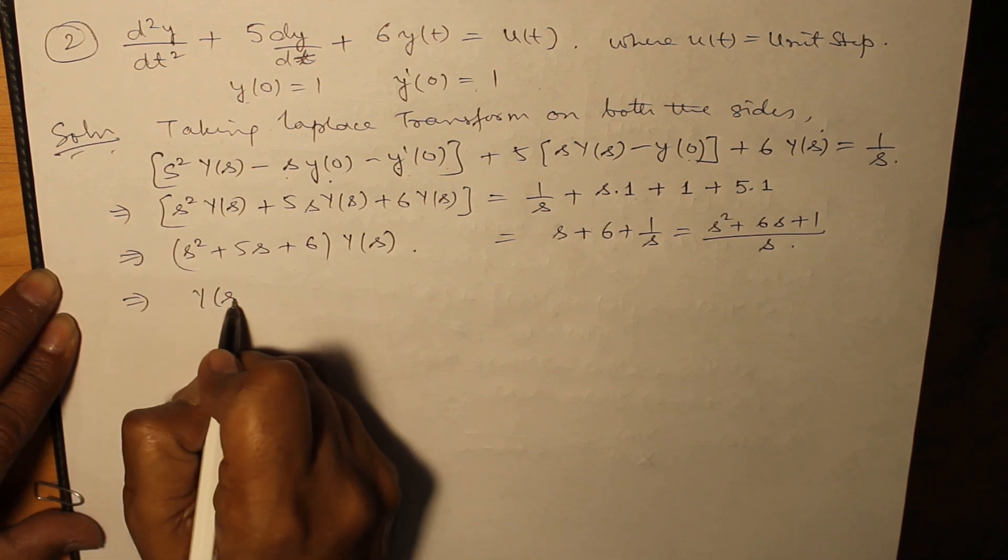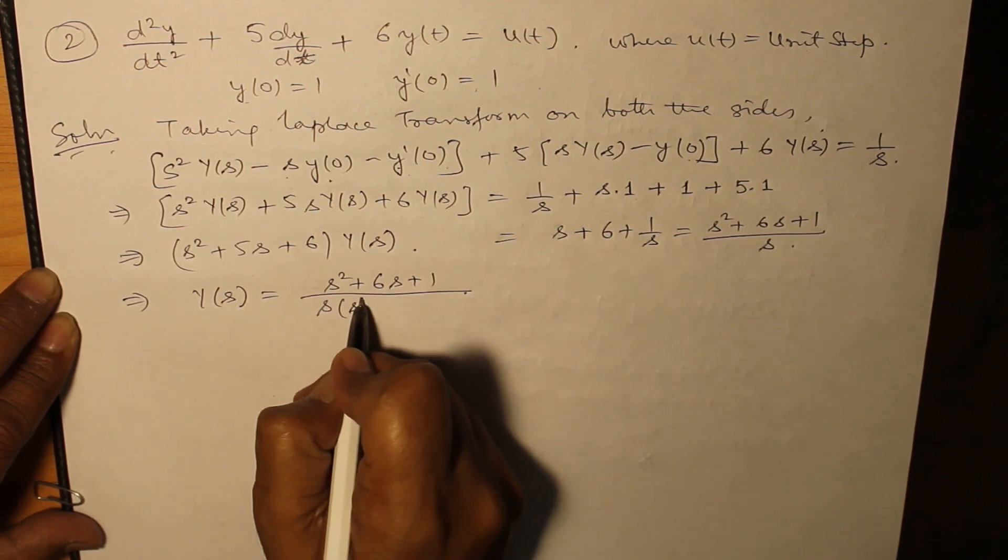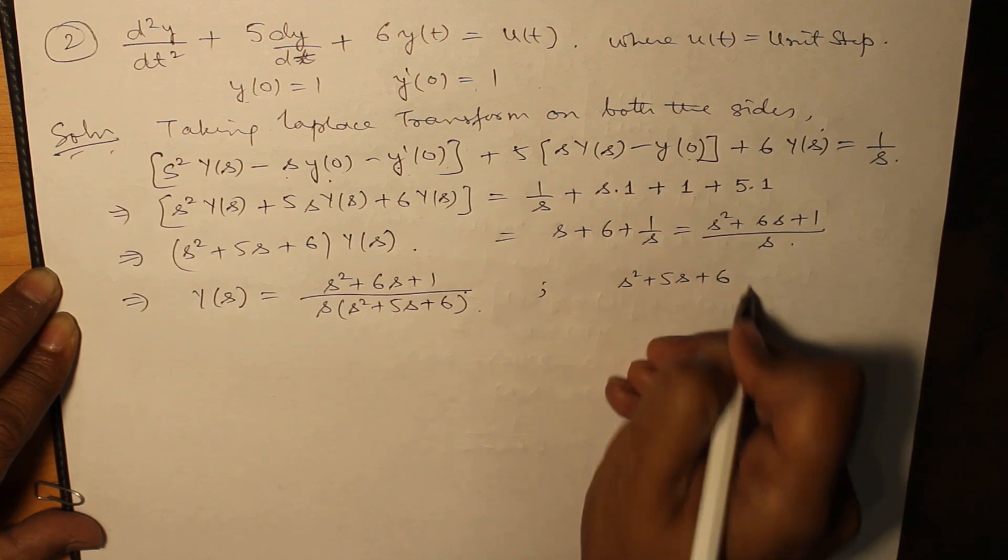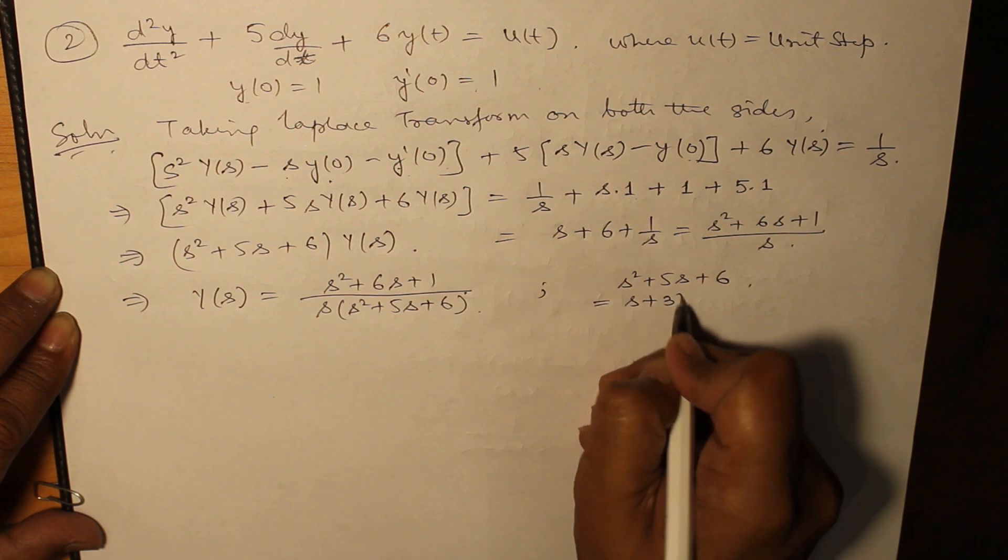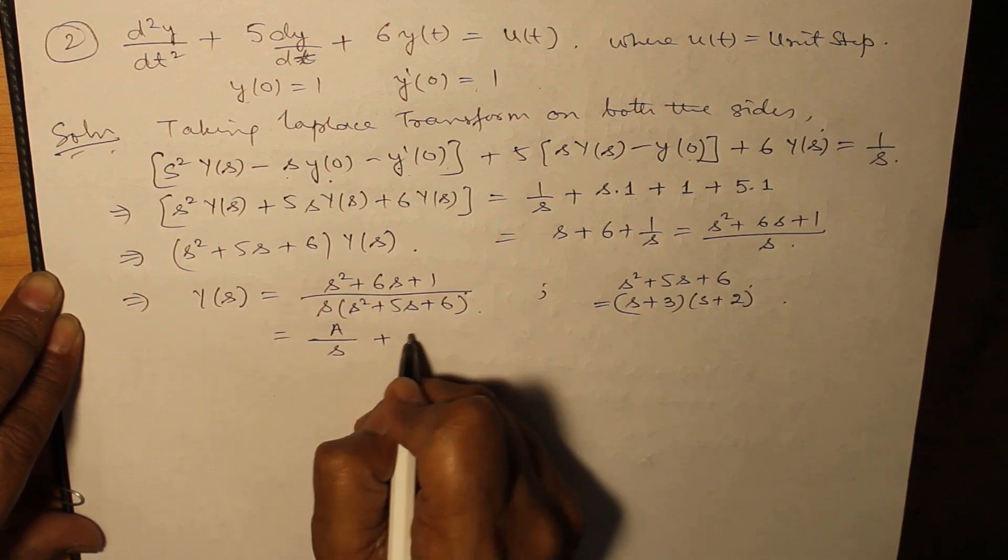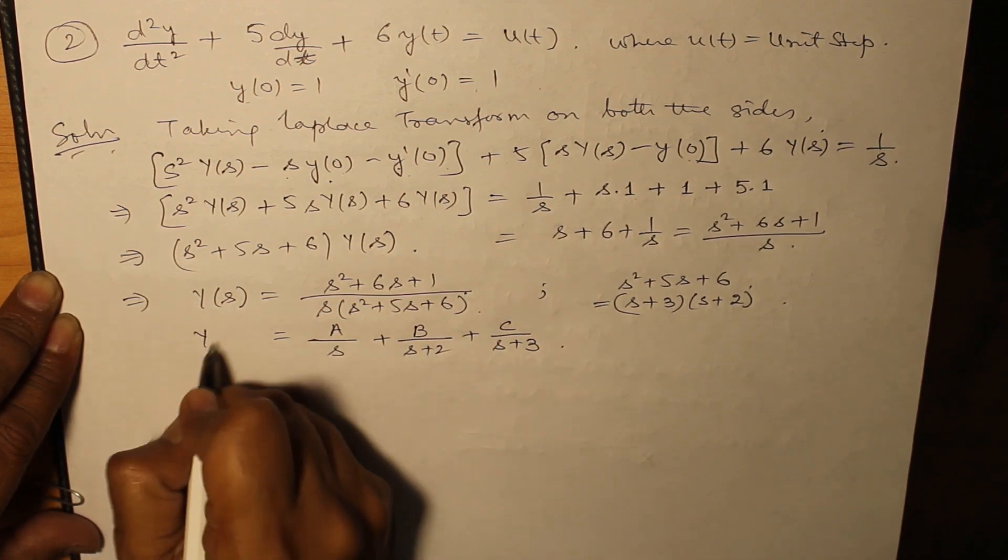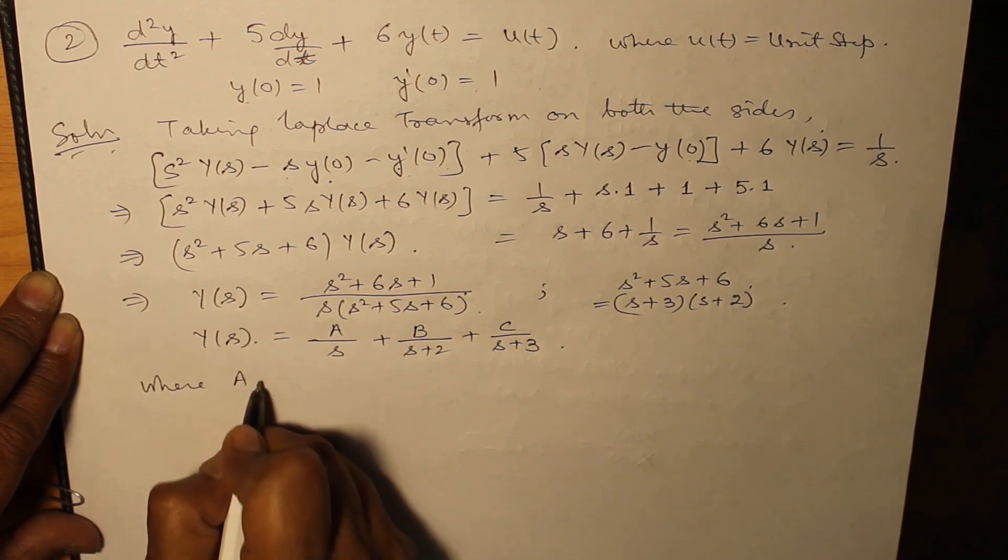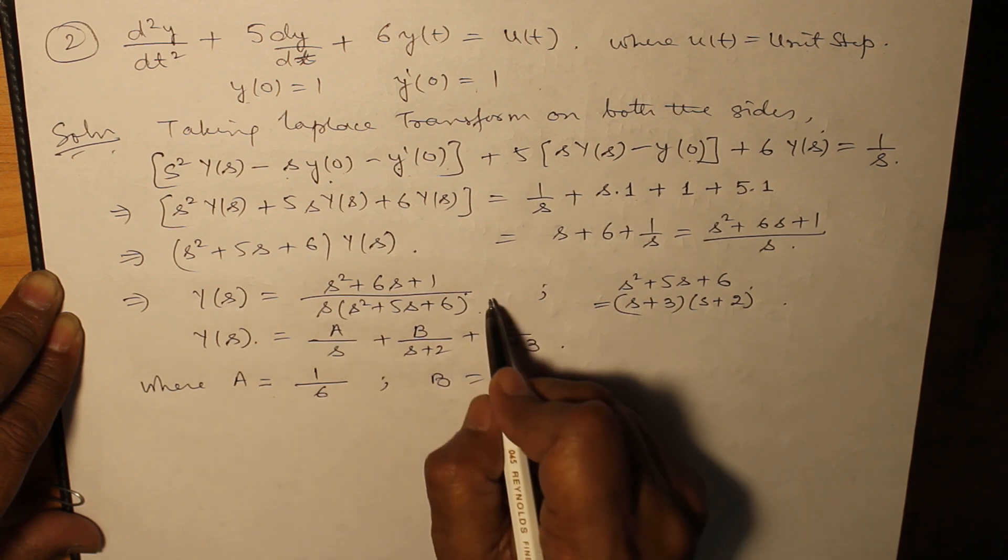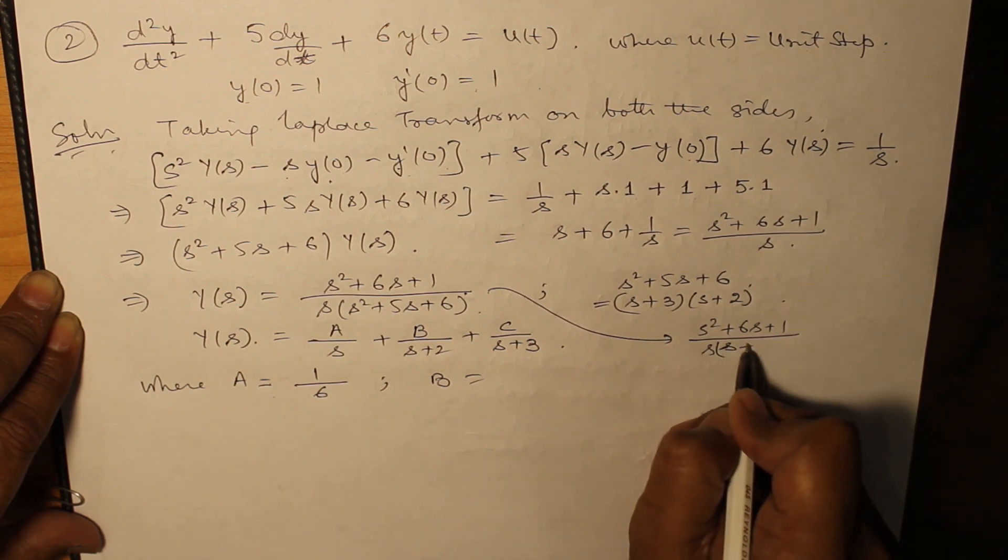Now Y(s) is equal to (s² + 6s + 1) divided by s(s² + 5s + 6). Let's factorize s² + 5s + 6, this gives you (s + 3)(s + 2). So we have 3 partial fractions, let us assume it as A/s + B/(s + 2) + C/(s + 3). For this we need to write down once one more step, that is (s² + 6s + 1) over s(s + 2)(s + 3).